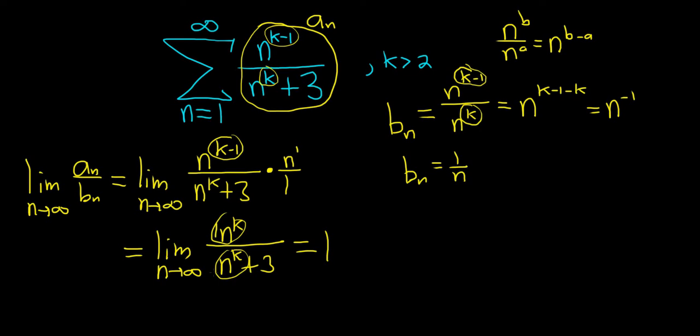So when you take the limit, you just get one. So because it's one over one, whenever the degrees match, you just take the ratio of the coefficients. In this case, it would be one over one, which is one, which is finite and positive. So it's really important to say that.